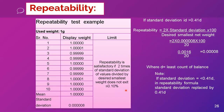For repeatability in performance qualification, the same method applies as discussed earlier: take 10 values, calculate the standard deviation. If standard deviation is greater than 0.41D, use the standard deviation in the formula; if less than or equal to 0.41D, substitute 0.41D. This completes the repeatability test in performance qualification.